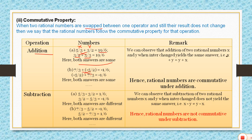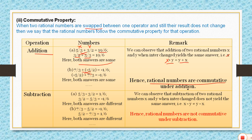Hence, x plus y equals y plus x for rational numbers. They are following commutative property under addition. Whether the numbers are x, y, or z in any order — in addition the result will always be the same, following commutative property.